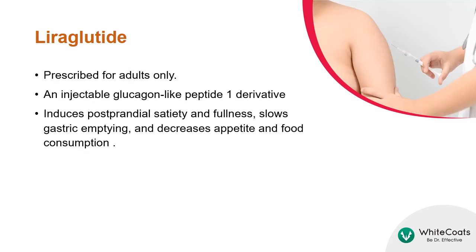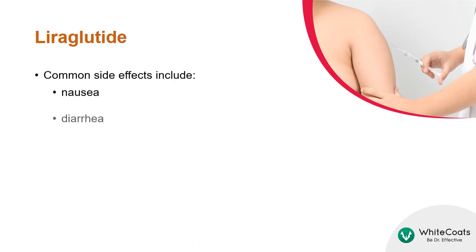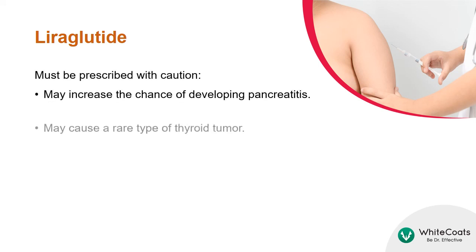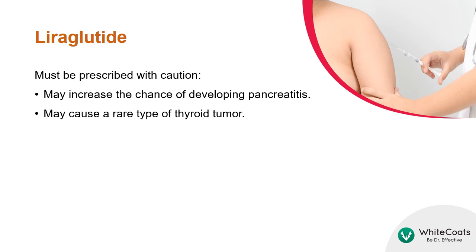Liraglutide is prescribed for adults only. It is an injectable glucagon-like peptide-1 derivative. It induces postprandial satiety and fullness, slows gastric emptying, and decreases appetite and food consumption. Common side effects are listed here. Liraglutide must be prescribed with caution, as it may increase the chance of developing pancreatitis and has been found to cause a rare type of thyroid tumor in animals.